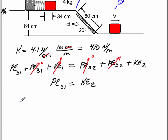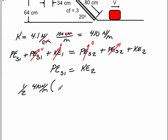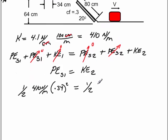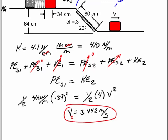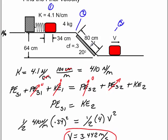We know that the potential energy of the spring is ½kx². So I'll put ½ times my K value, which is 410 newtons per meter, times the deflection in meters, which is 0.34 squared. I set that equal to ½ times my mass, which is 4, times v squared. Running the numbers, you get the velocity — in this case 3.442 meters per second. Remember, that velocity is the velocity at position 2, when the mass is just about ready to go down the incline.